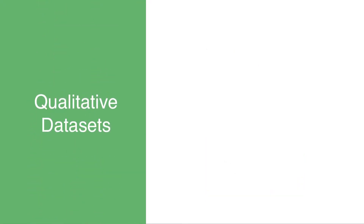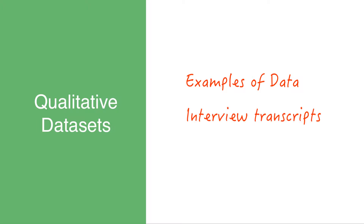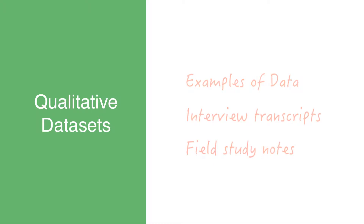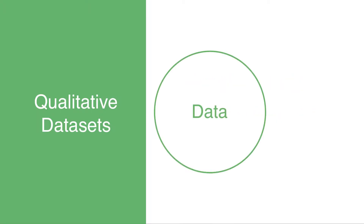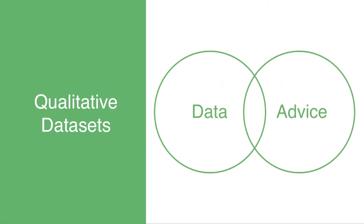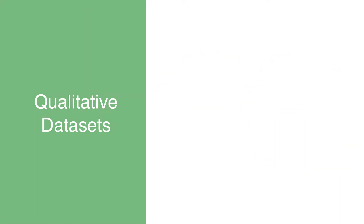The qualitative data sets include examples of various types of qualitative data, including interview transcripts and field study notes, as well as visual material. Accompanying the data is clear, easy-to-follow advice on how you might approach analysis of the data, making it perfect for students learning qualitative methods and for teachers looking for examples they can include in their research methods course.